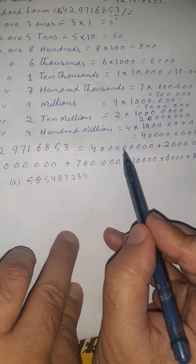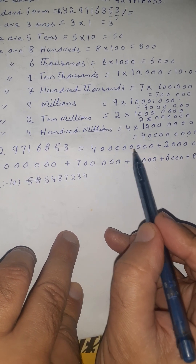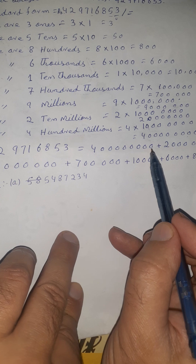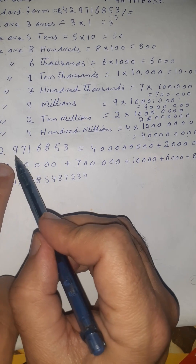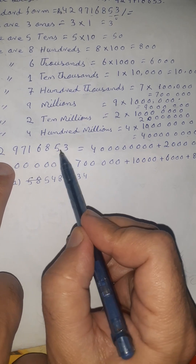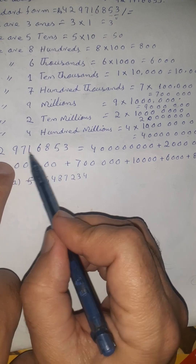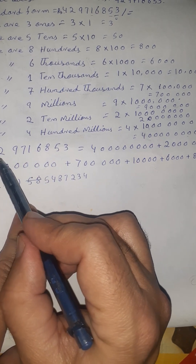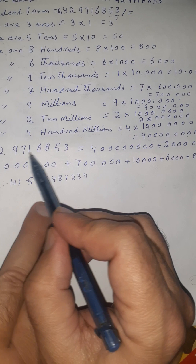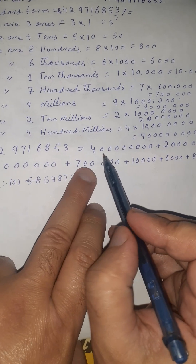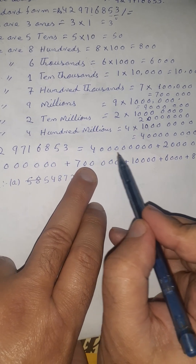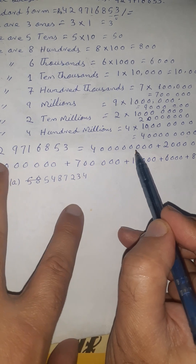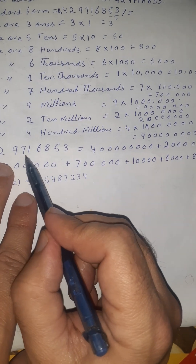One, two, three, four, five, six, seven, eight. Let me show you. The two numbers are seven digits. The two numbers are three. The four now read the eight digits. The two numbers are seven.